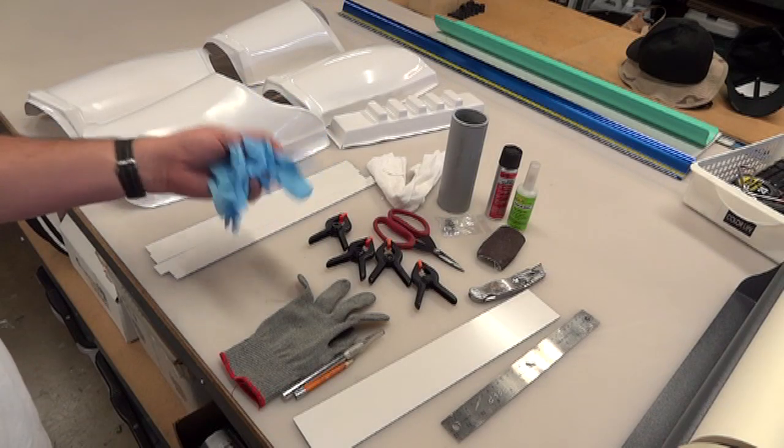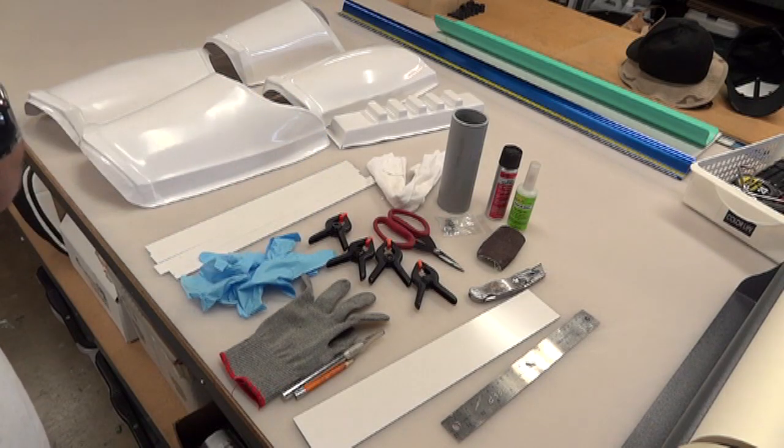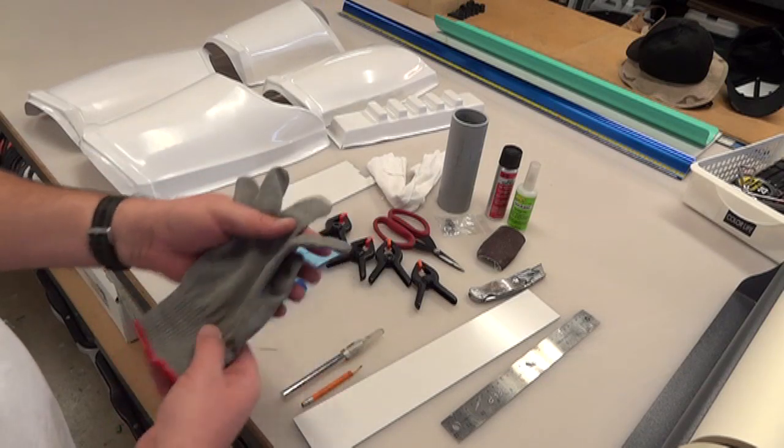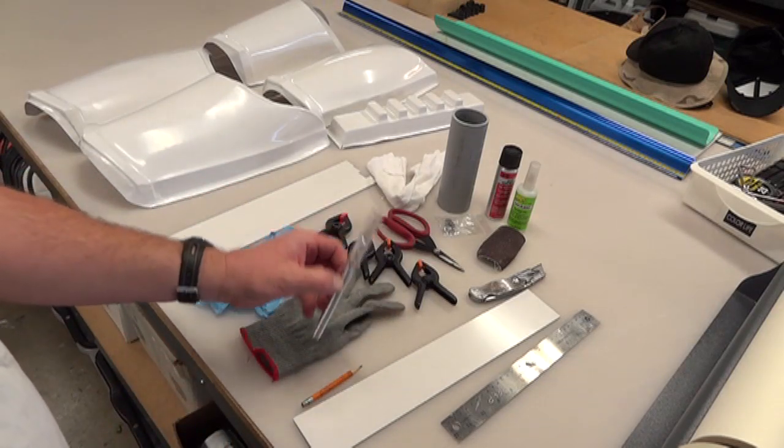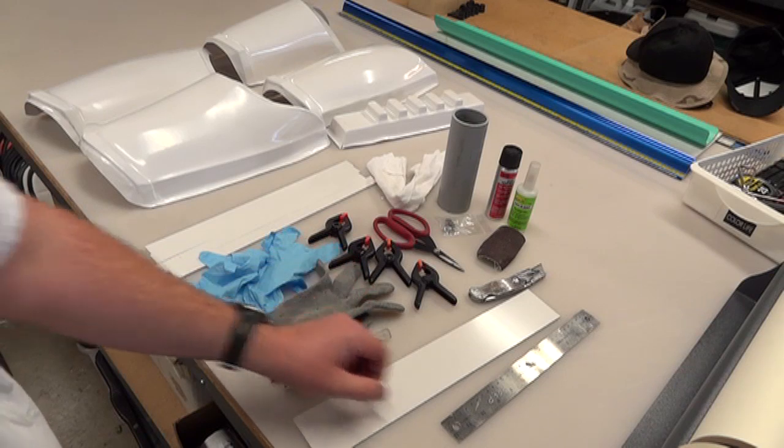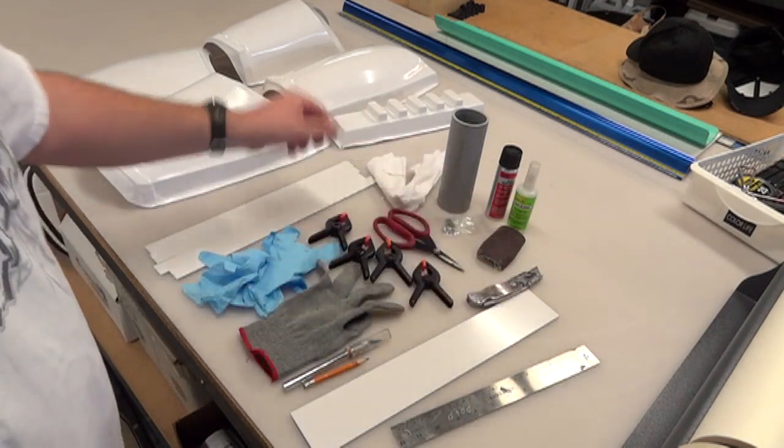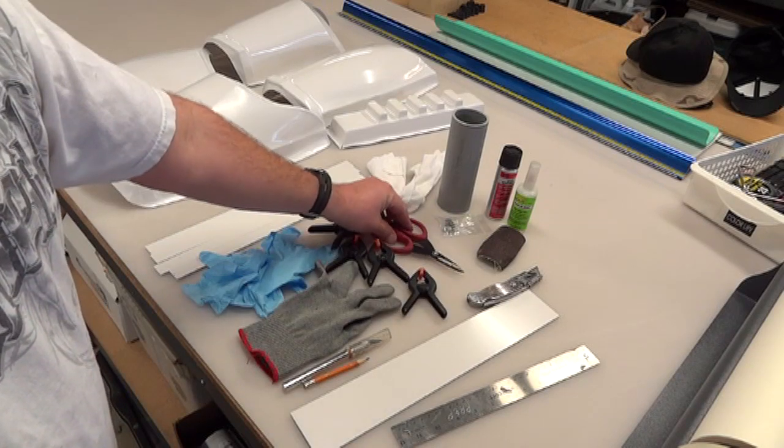You're going to need some latex gloves to protect your hands from the super glue, the protection glove for protecting your hands against the knives, an exacto blade, pencil, a ruler, shop knife, clamps, and a pair of scissors.